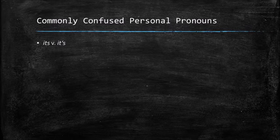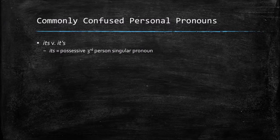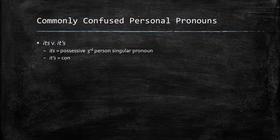We'll begin with 'its' versus 'it's.' Its without the apostrophe is your possessive third-person singular pronoun, while it's with the apostrophe is a contraction for two words: it is.